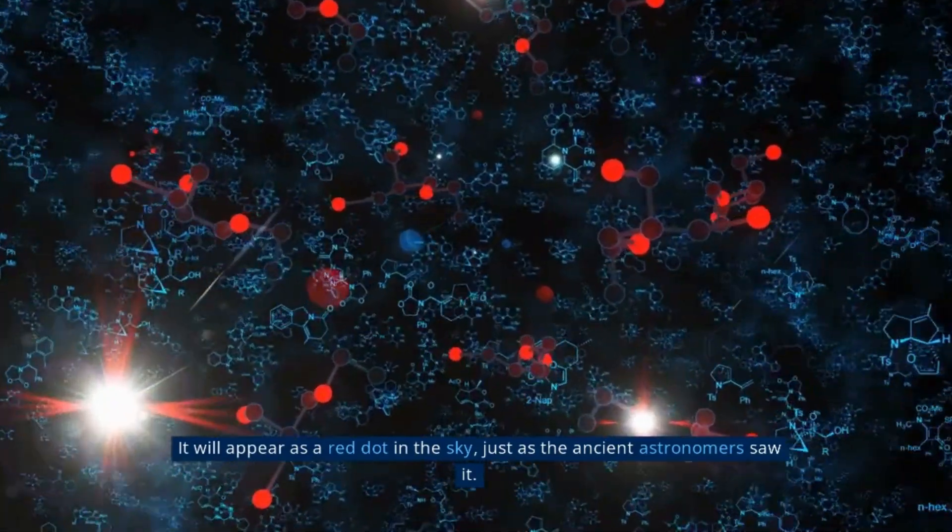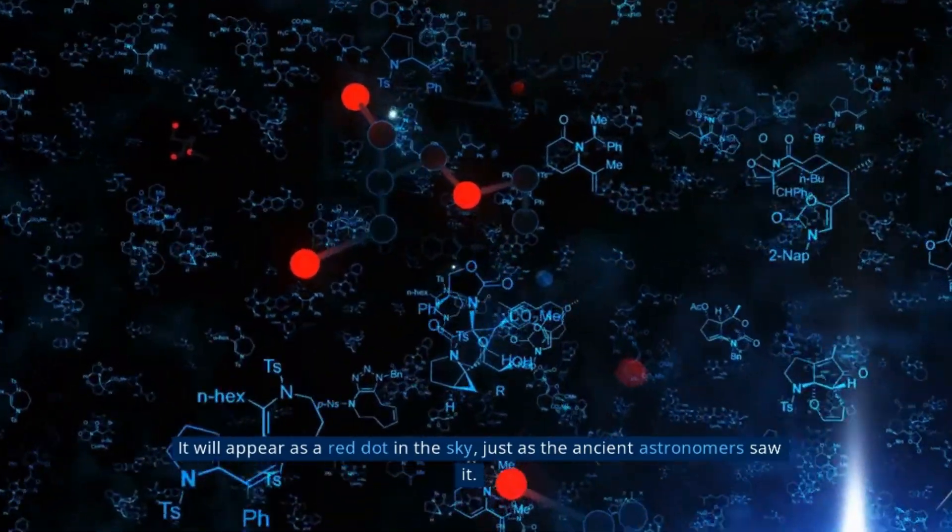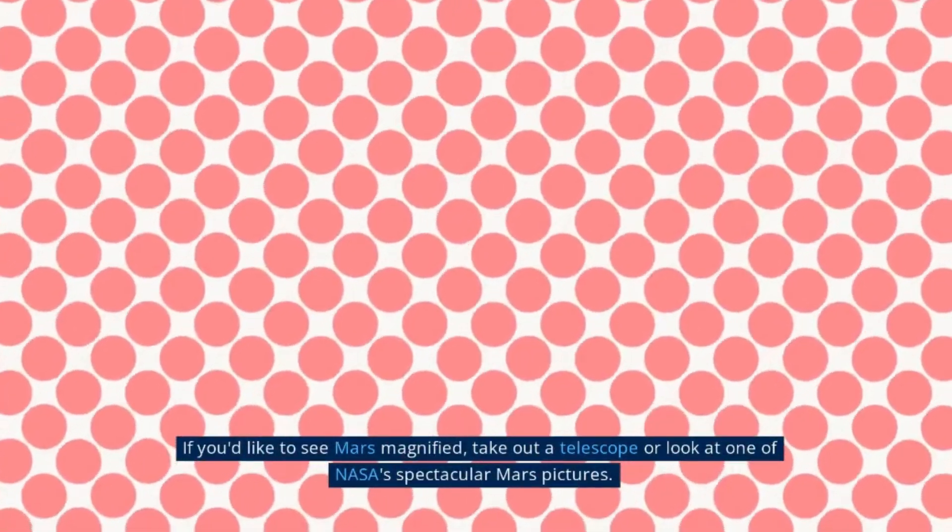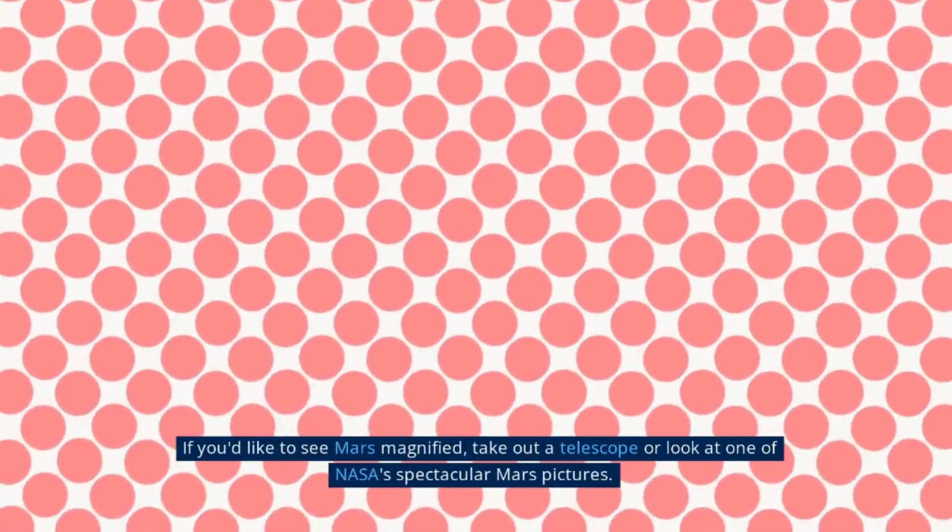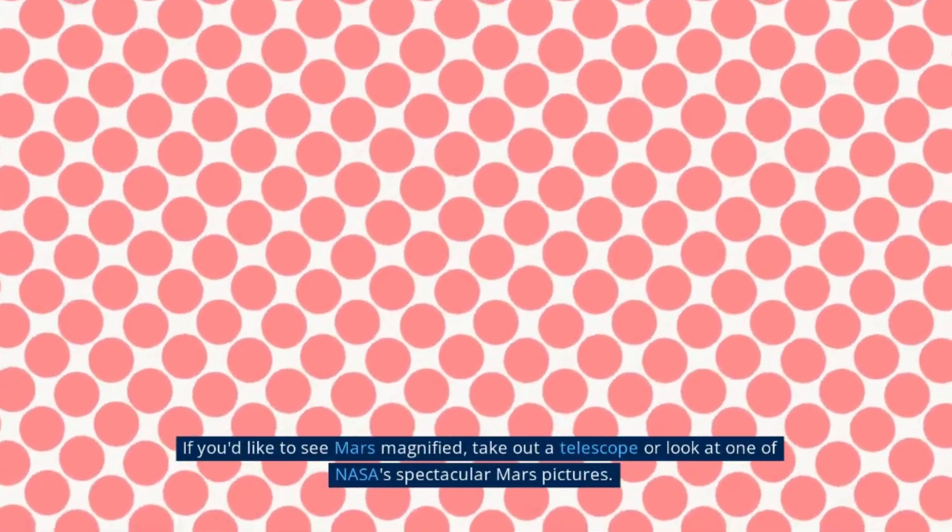It will appear as a red dot in the sky, just as the ancient astronomers saw it. If you'd like to see Mars magnified, take out a telescope or look at one of NASA's spectacular Mars pictures.